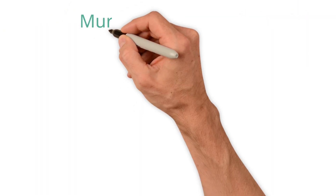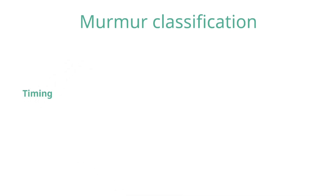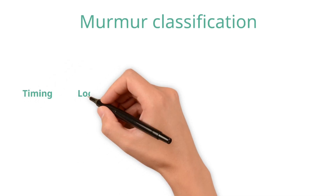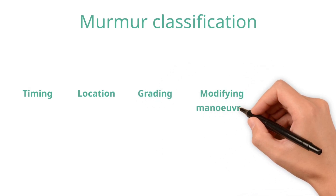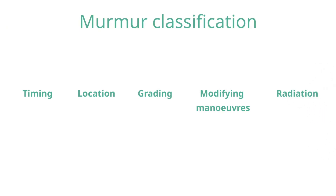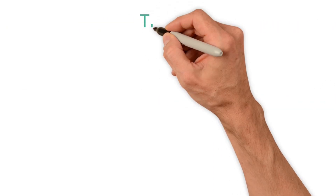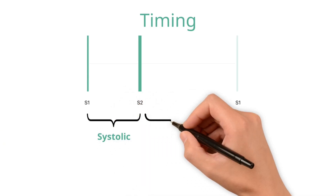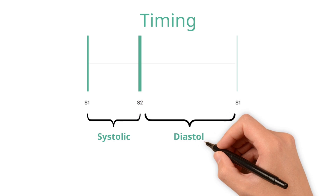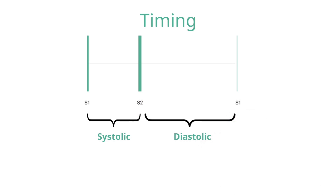So how are murmurs classified? Murmurs can be classified in the following ways: their timing relative to the cardiac cycle, where they are loudest on the chest, how loud they are, what makes them louder or quieter, and where they radiate to. Timing a murmur is the most important first step. Murmurs can occur in systole — between S1 and S2 — diastole — between S2 and before the next S1 — or can be continuous, occurring throughout the cardiac cycle.